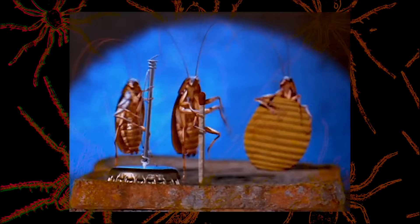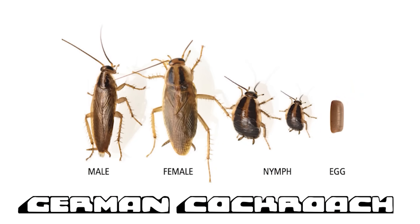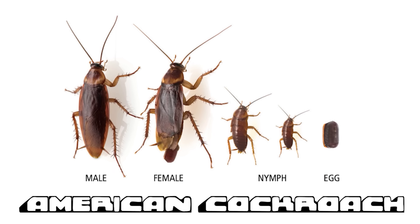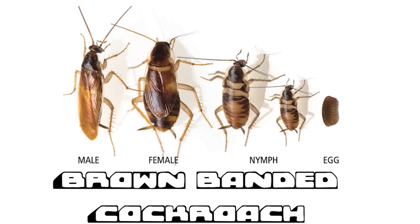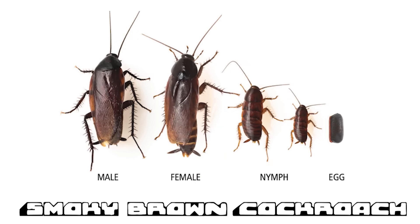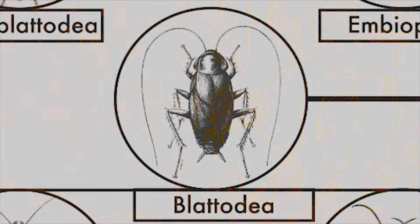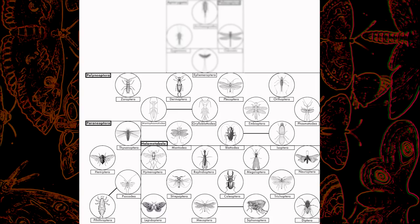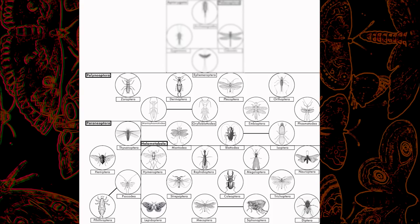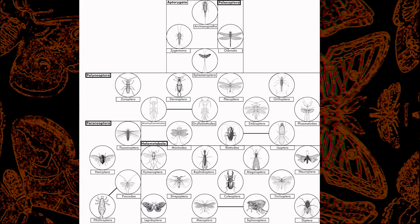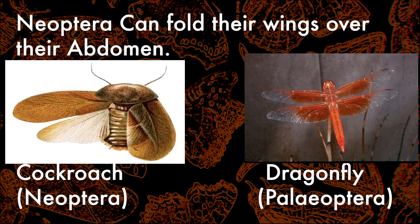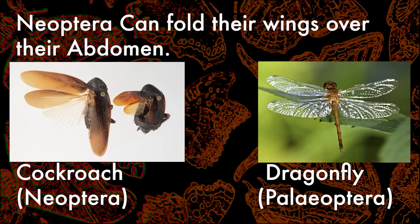That being said, here's what the five most common cockroach species in the home look like. The order Blattodea belongs in the Neoptera, or new wing, and is the third of five major subdivisions of insects. They are defined as the first insects to be able to fold their wings over their abdomen, and they all come in many shapes and sizes.